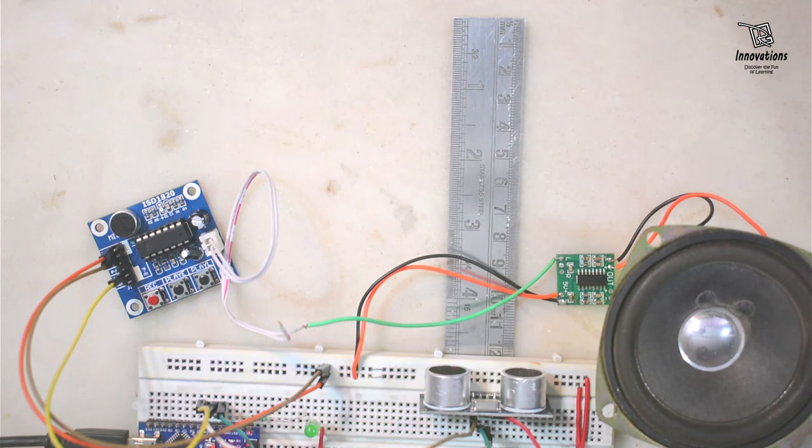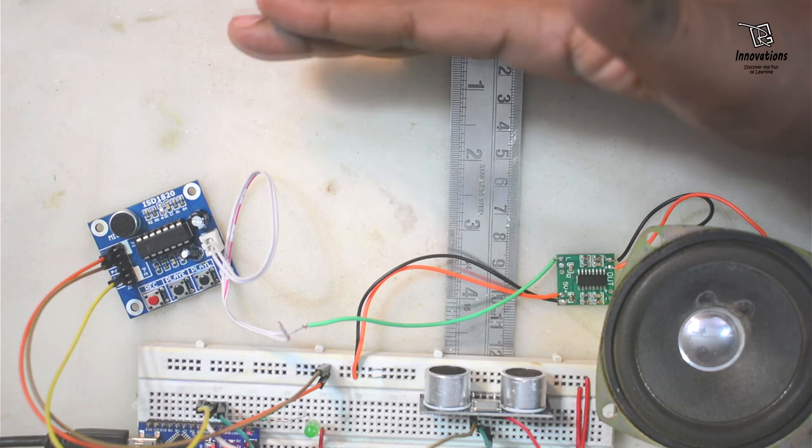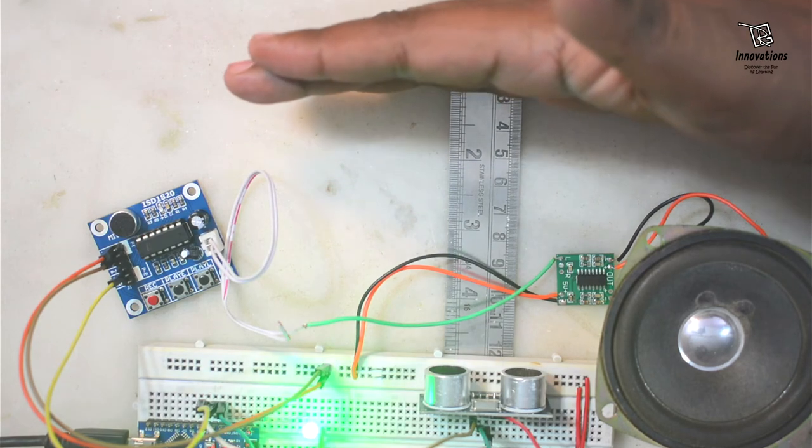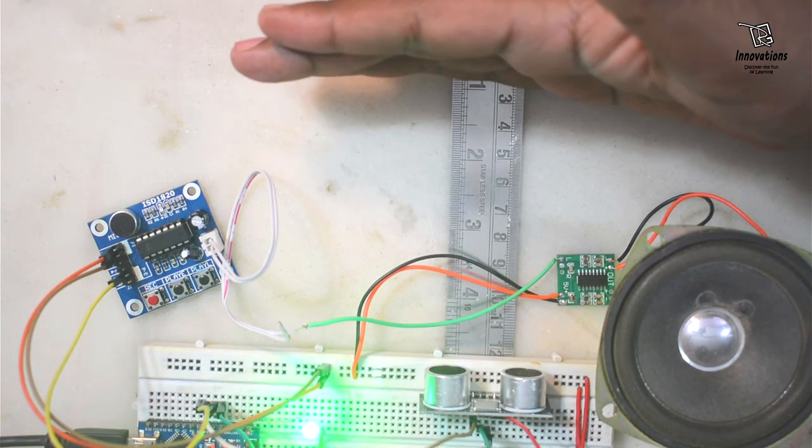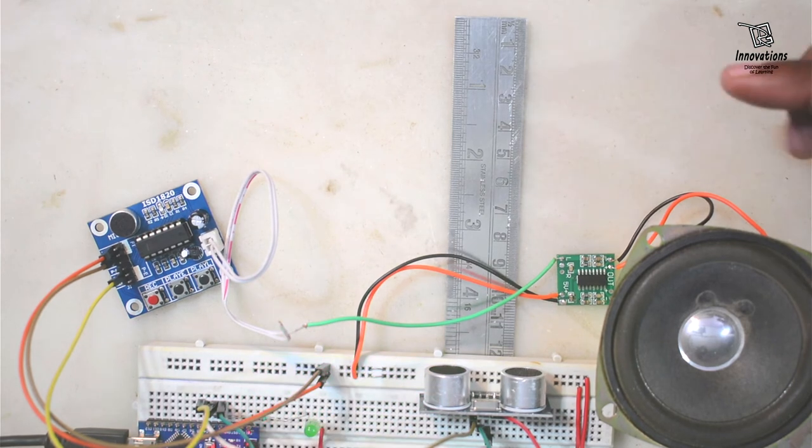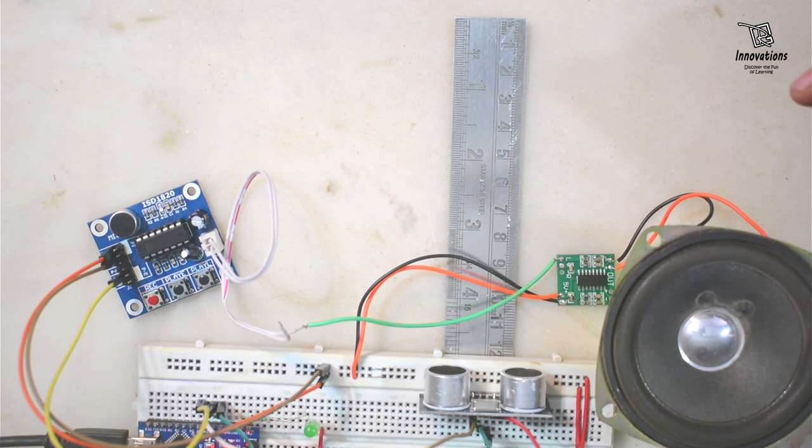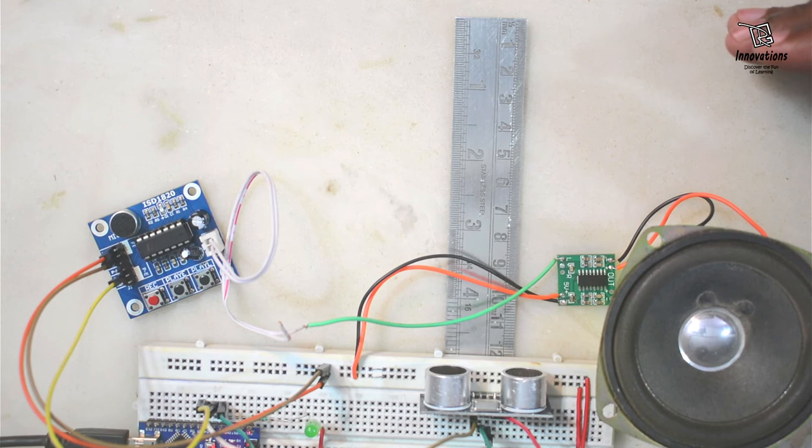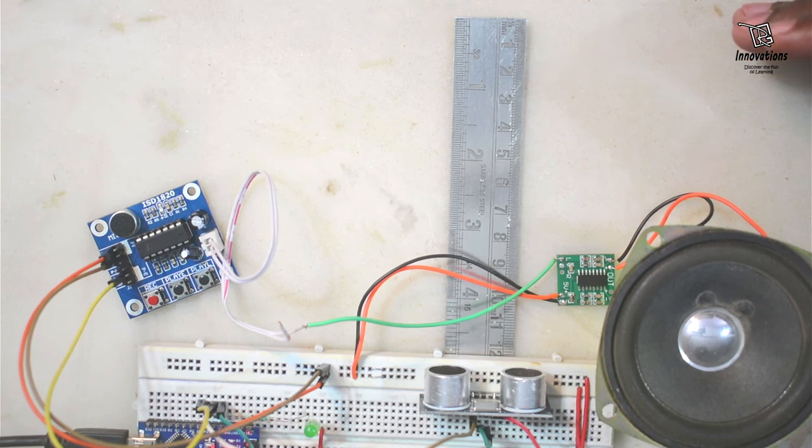Now if I remove my hand, it will not generate any alarm. Again let me show you. Alert! Do not cross beyond this point. So at the distance of 10 cm, it is giving a voice alert that do not cross beyond this point. So we can build any project of this type where we need to stop someone from entering somewhere or we want to count the visitor.